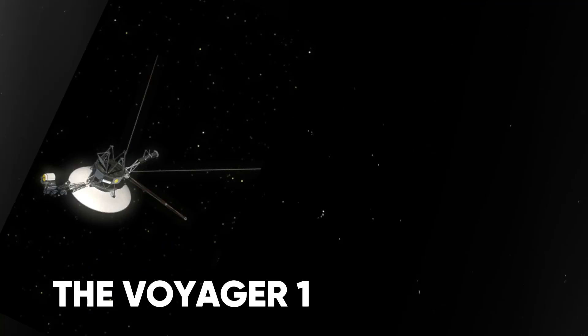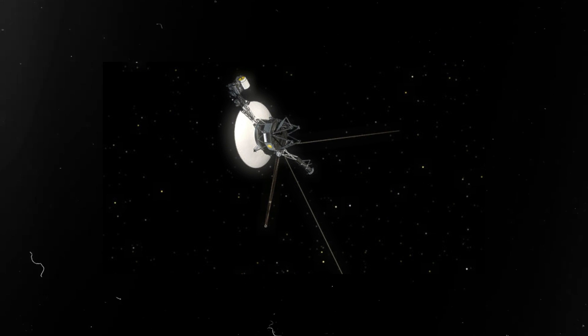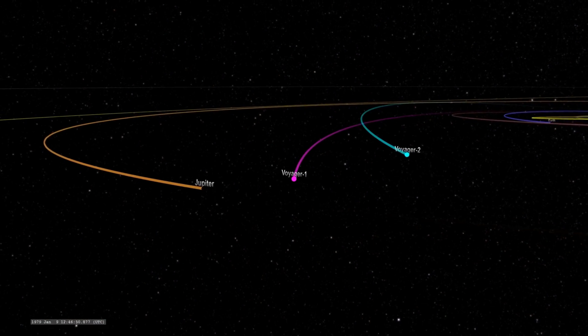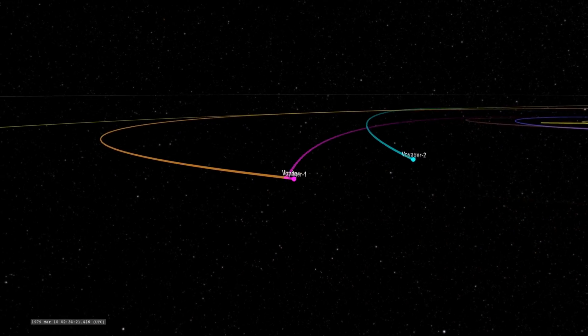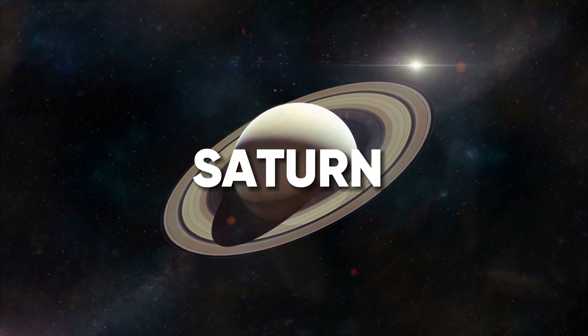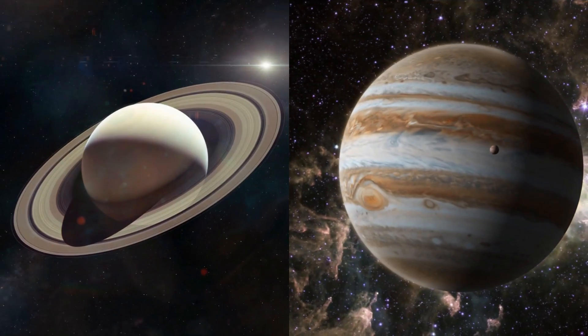After their launch in 1977, the Voyager 1 and Voyager 2 spacecrafts began their journey towards the outer planets of our solar system. They conducted flybys of Jupiter and Saturn, sending back stunning images and groundbreaking scientific data about these gas giants.